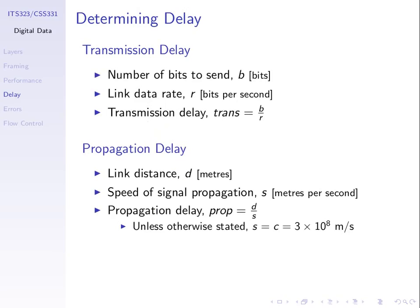For calculating delays: transmission delay equals the number of bits divided by the data rate. Propagation delay equals the distance of the link in meters divided by the signal propagation speed. Unless told otherwise, assume the speed is 3×10⁸ meters per second — the speed of light. In some questions I may specify 2×10⁸ m/s. Different materials have different speeds, so I may give you a specific value.